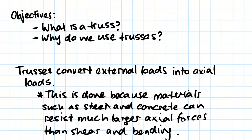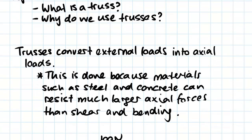Steel and aluminium are the most common truss materials. Basically, we'll have really slender members — really thin members — that can support quite large loads, because the trusses are designed to eliminate any shear and bending forces and just take axial loads.